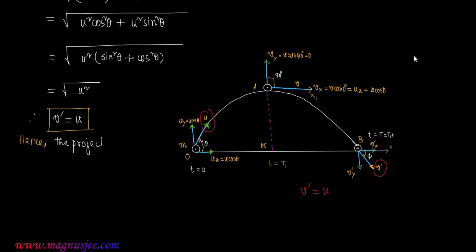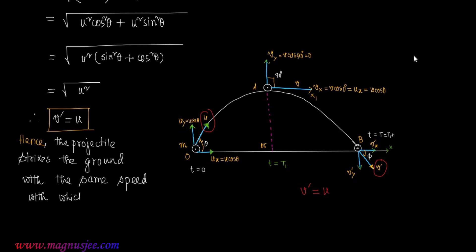Hence, the projectile strikes the ground at point B with the same speed V prime = U with which the projectile was thrown or projected from point O at angle theta. The projectile strikes the ground with the same speed with which it was projected.